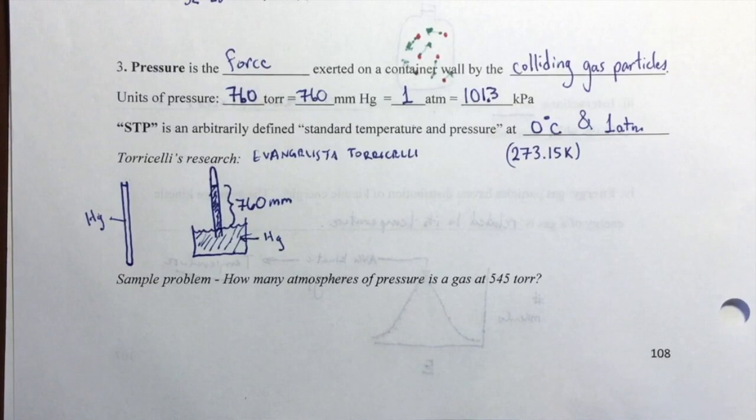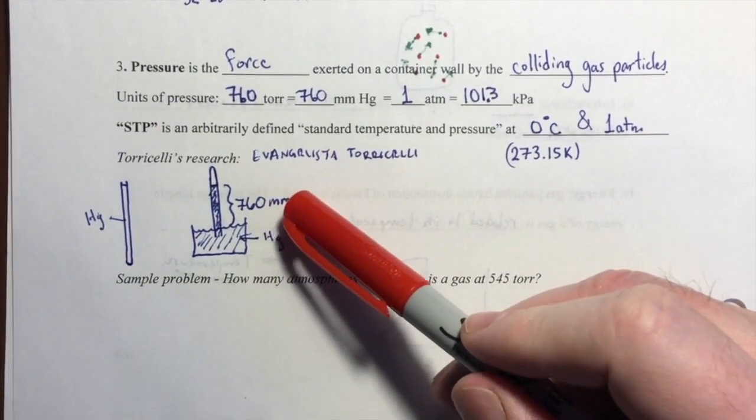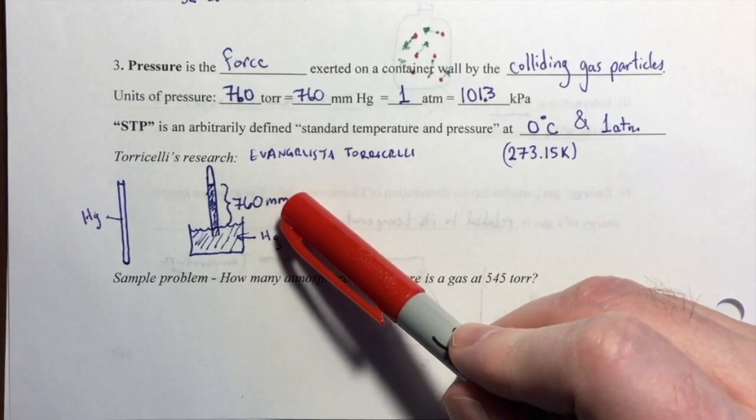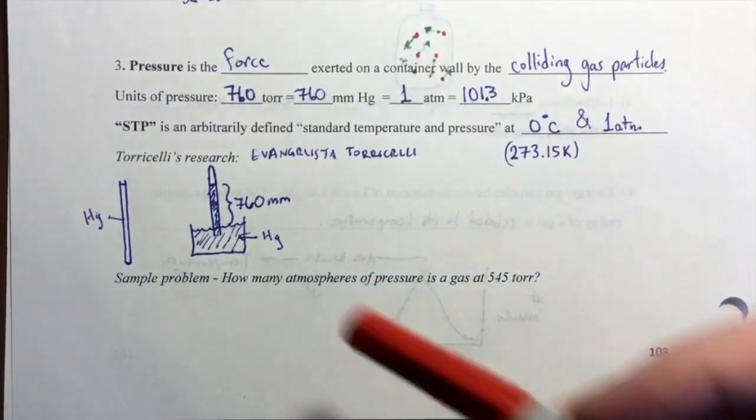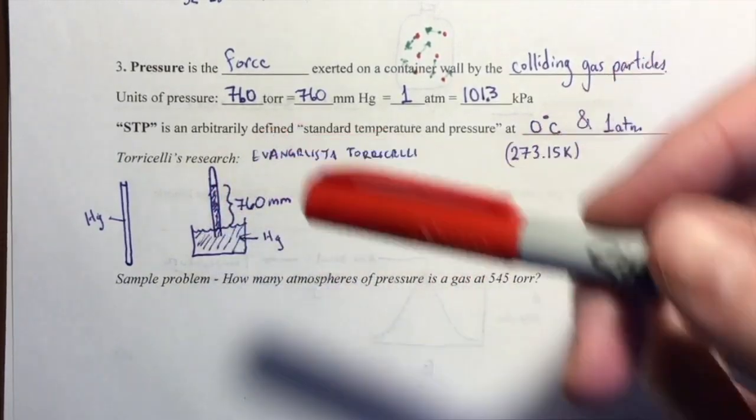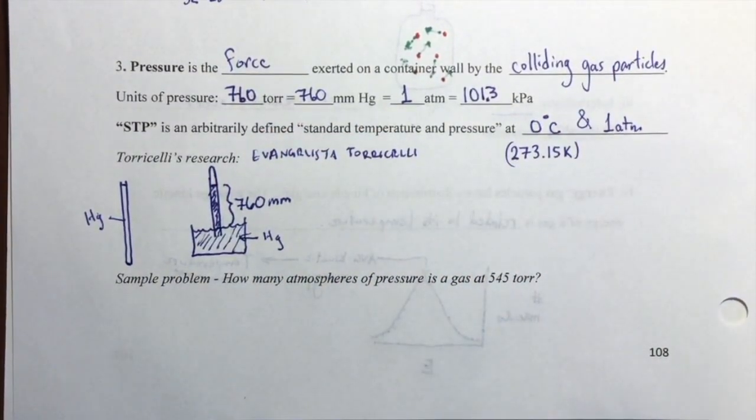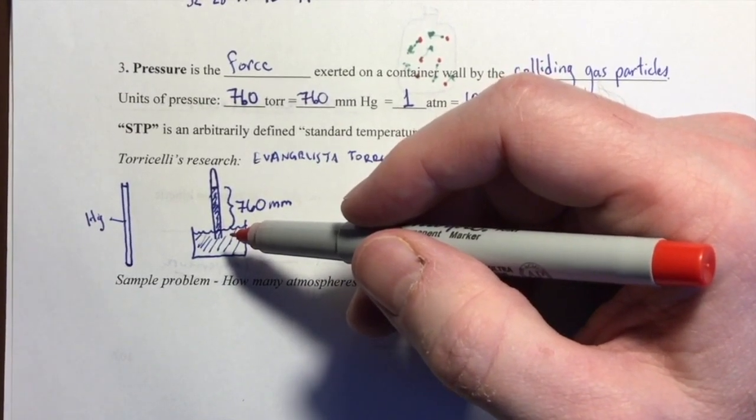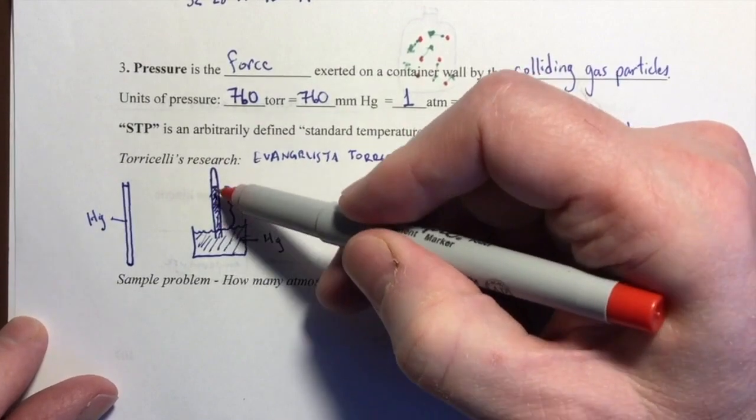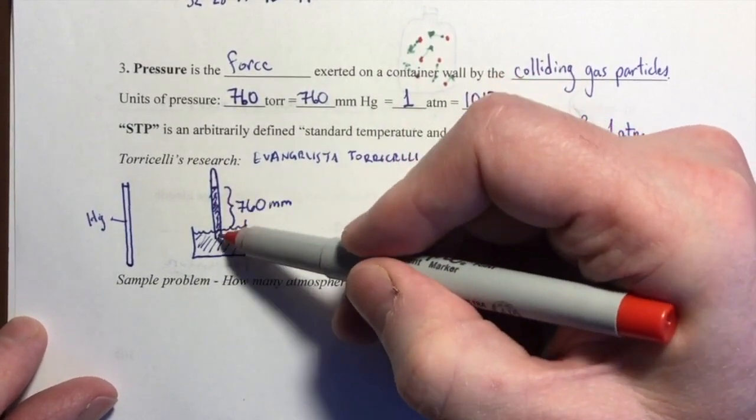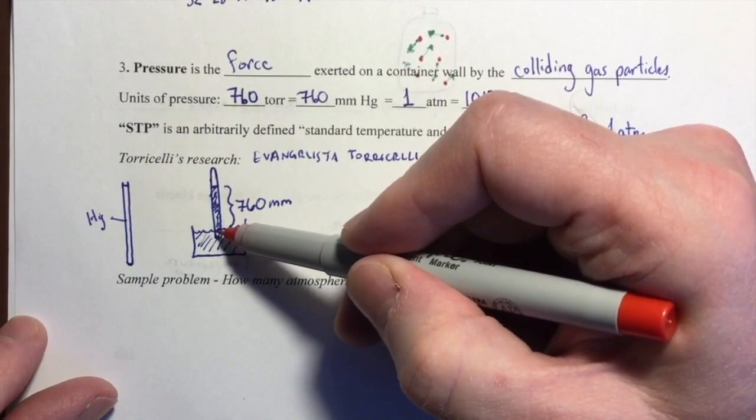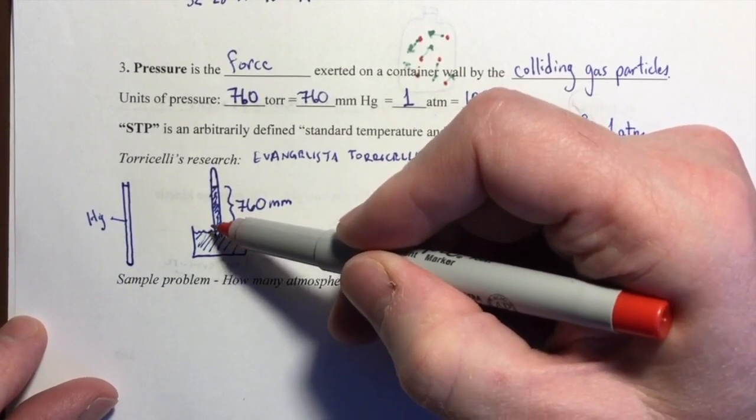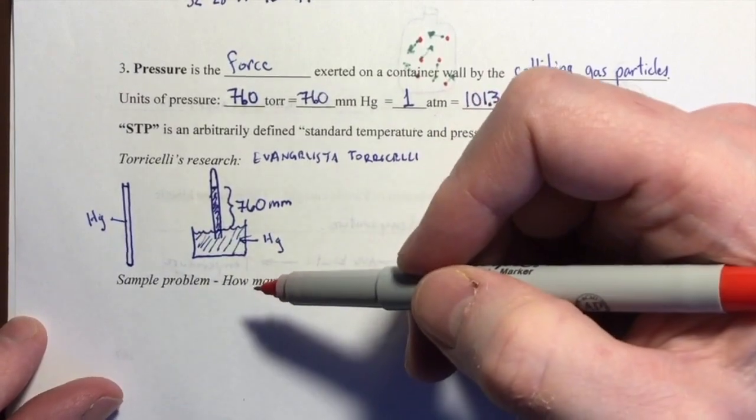This puzzled Torricelli. He says, why is it always 760 millimeters? What is so special about that number? And why does the liquid mercury stay in the tube in the first place? Why does it not all drain out? And he came up with a hypothesis. He said, I know about forces from Isaac Newton. I know that if this mercury is resisting the force of gravity to stay in this tube, then there must be some other force that is acting to prevent it from draining out.